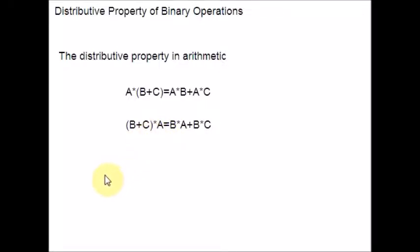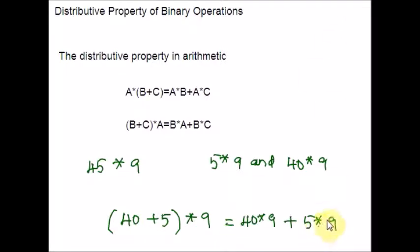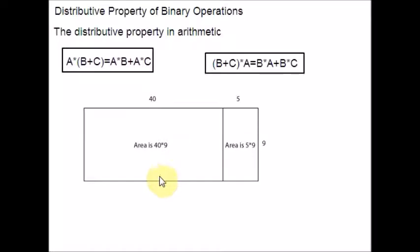For example, when we multiply 45 times 9, by multiplying 5 times 9 and 40 times 9, we use the right distributive property. So: (40 + 5) × 9 = 40 × 9 + 5 × 9. Any time we finish a multiplication problem by adding, we are using the distributive property. If we think of multiplication as finding the area of a rectangle, then the distributive property can be nicely illustrated — the sum of the areas of the two smaller rectangles is the same as the area of the larger rectangle: 40 × 9 + 5 × 9 = 45 × 9.